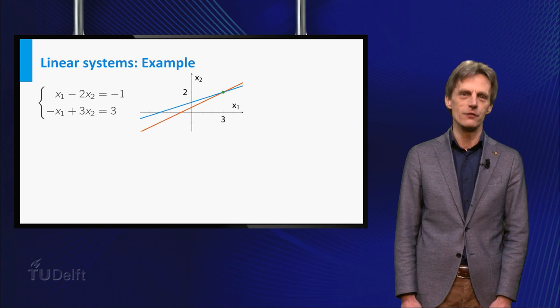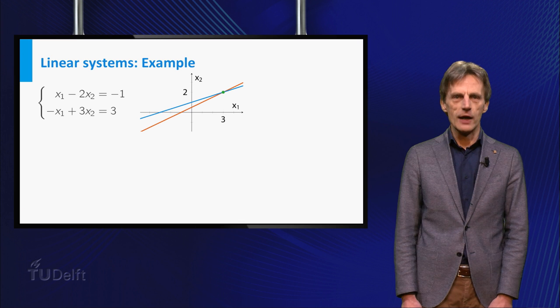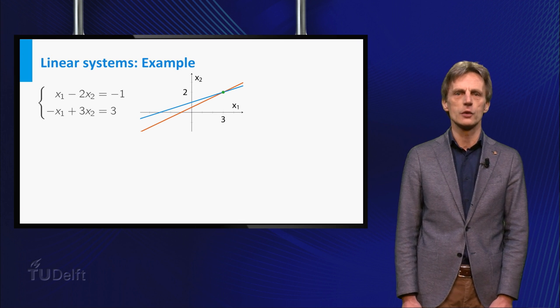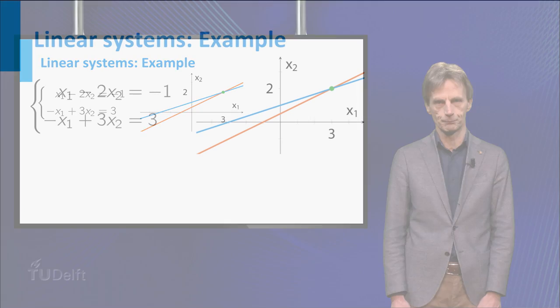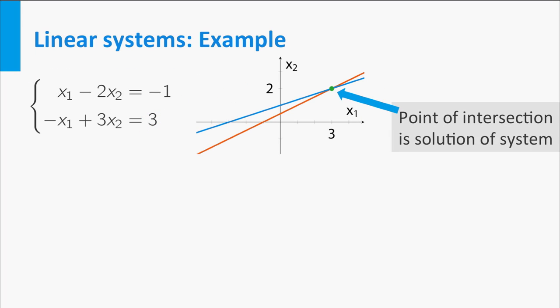If you draw these lines you see that these two lines intersect at a single point with coordinates x1 equal to 3 and x2 equal to 2. The intersection point shown here is a solution of the linear system.